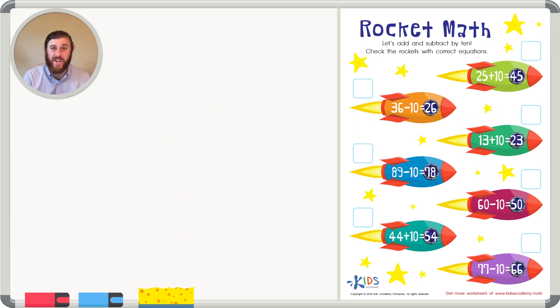Do you think you could do one in your head? What if we had 65 plus 10? Well let's see, 5 plus 0 is just 5, and 6 plus 1, well 1 more than 6 is 7. So I know that 65 plus 10 is 75 because the only number that changes is my 6.